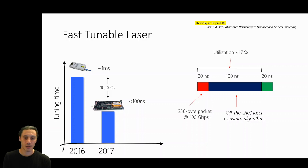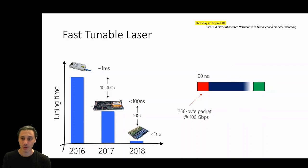But we were getting close to the limit of what could be done with off-the-shelf lasers. So in 2018, we took a dive into chip fabrication and designed our own custom tunable laser. This chip allows us to scale to switching times below one nanosecond, a further two orders of magnitude improvement, and this opens the way for nanosecond granularity optical switching.